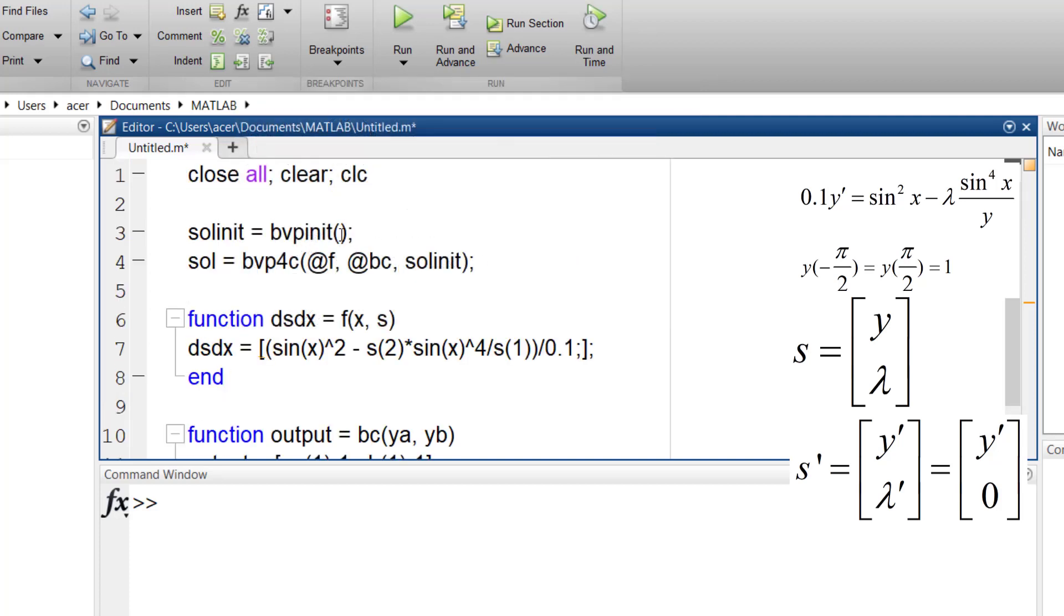For the initial guess, again I discretize my interval into 50 points. And I use some initial guess for y and lambda.